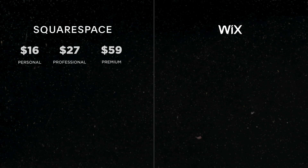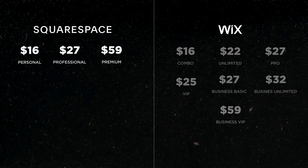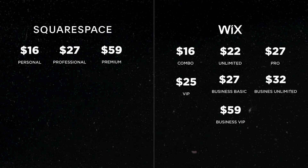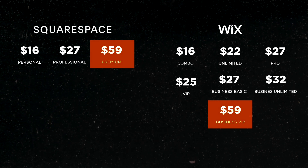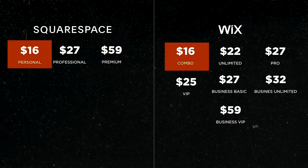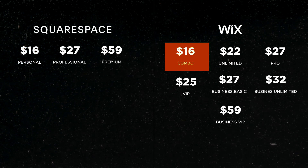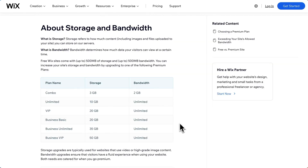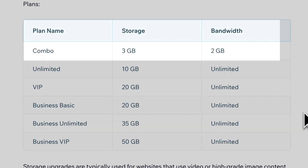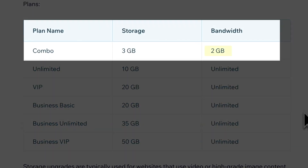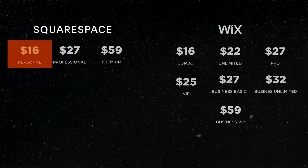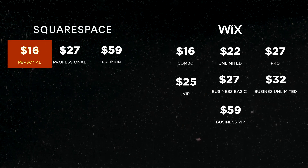Let's look at their plans. Squarespace has three pricing plans, and Wix has seven. The most expensive plan for both is $59. The cheapest plan is $16. Though there's something you should know about Wix's cheapest plan, Combo — if you read their documentation, you can see it's their only plan with a bandwidth limit, which basically means your website has a limit on how many visitors it can have. Squarespace's cheapest plan has unlimited bandwidth.